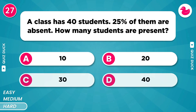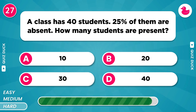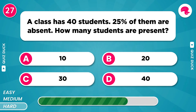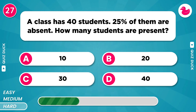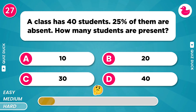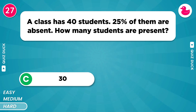A class has 40 students. 25% of them are absent. How many students are present? It's 30.